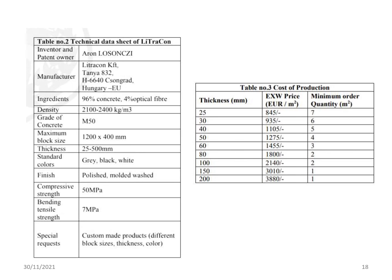Technical data sheet: Inventor and patent owner — Aaron Losonczi. Manufacturer — LitraCon KFT, Kiskunhalas, Hungary. Composition: 96% concrete, 4% optical fiber. Density: 2100–2400 kg/m³. Grade: Concretium 50. Maximum block size: 1200 x 400 mm. Thickness: 25–500 mm. Standard colours: grey, black, white. Finish: polished, moulded, washed. Compressive strength: 50 MPa. Bending tensile strength: 7 MPa. Custom-made products available on special request.